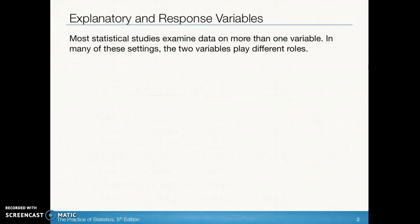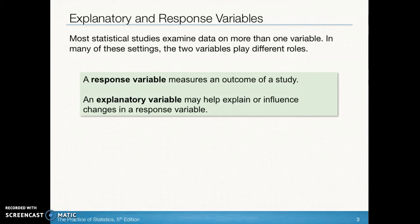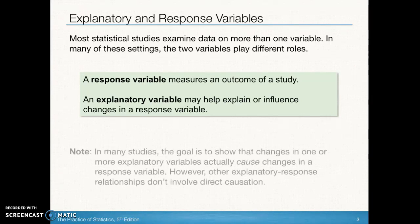We have looked at in Chapter 1 and Chapter 2 univariate data, which means one variable, either a categorical variable or a numerical variable. In this chapter, we're going to be looking at two numerical variables and how they relate to each other. The response variable is going to be the outcome of a study or whatever we're measuring at the end of an experiment. The explanatory variable is the one that helps explain what changes we see in the response variable.